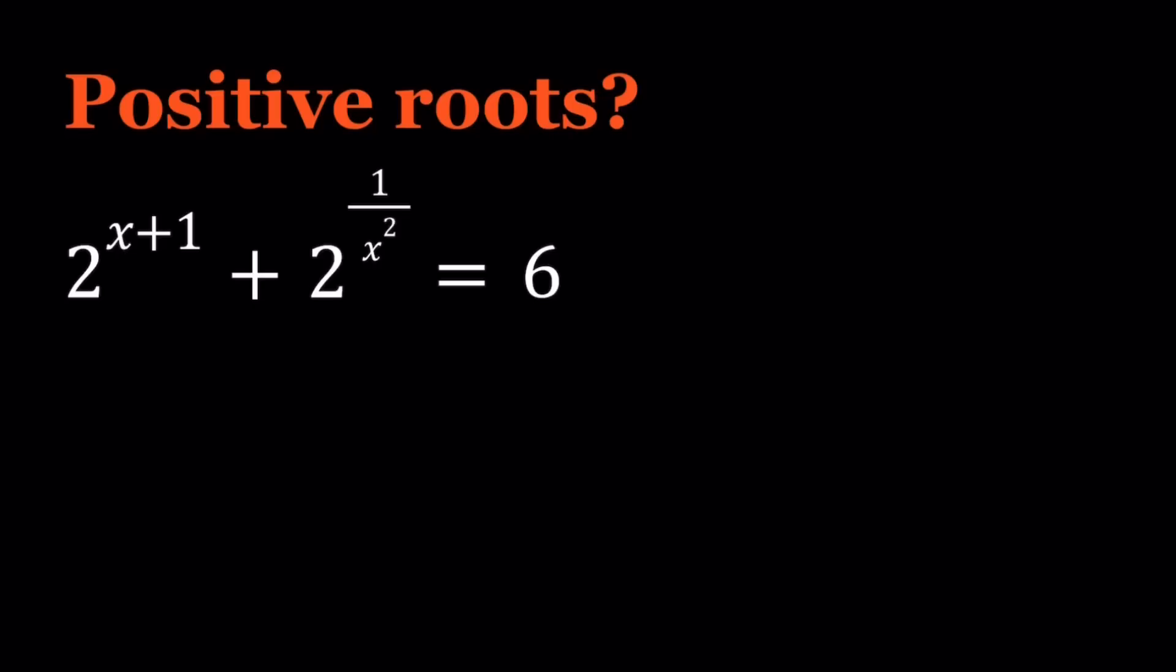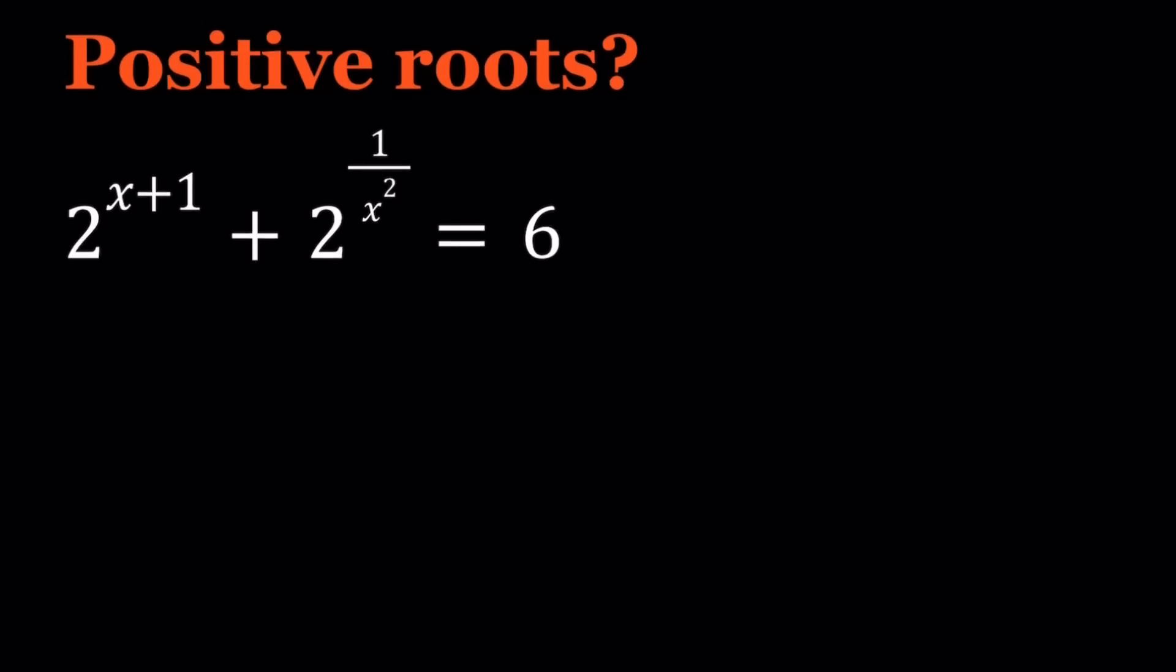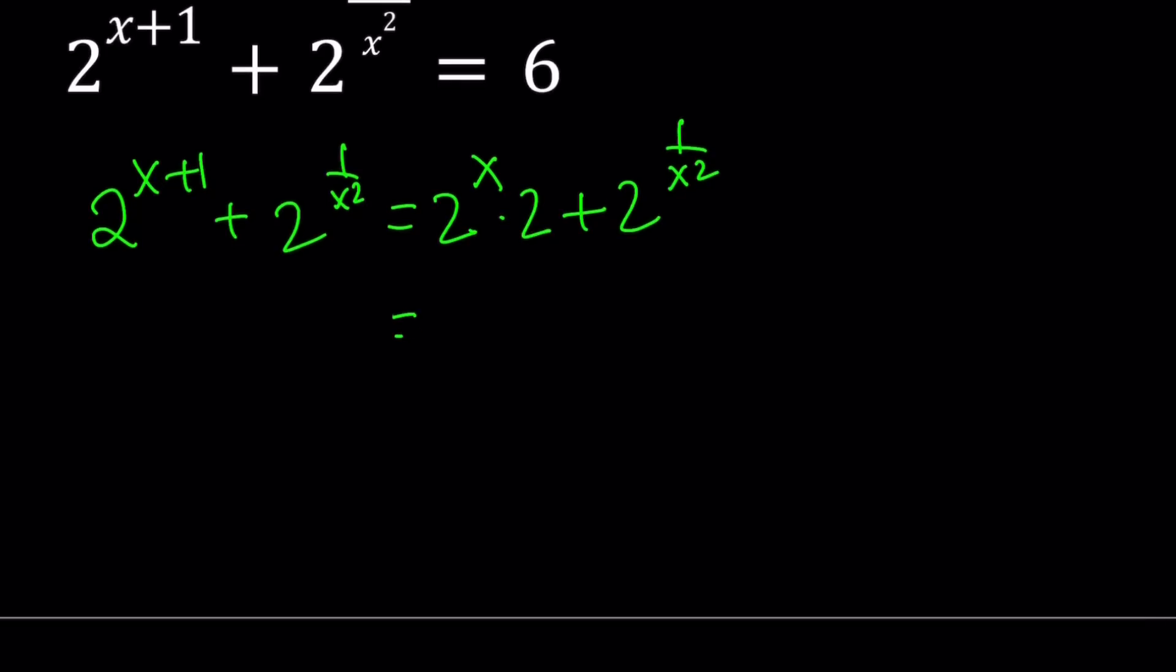So let's consider the following. I'm going to go ahead and write this as 2 to the power x times 2 plus 2 to the power 1 over x squared. And since I have the 2 to the power x twice, I can go ahead and write it as 2 to the power x plus 2 to the power x plus 2 to the power 1 over x squared.